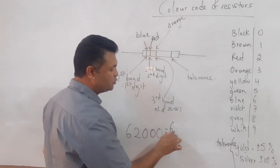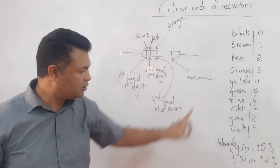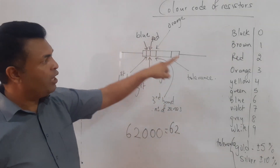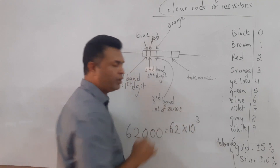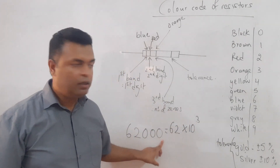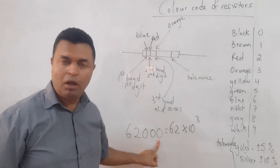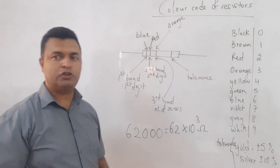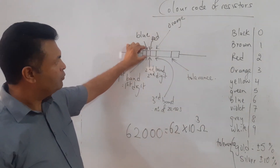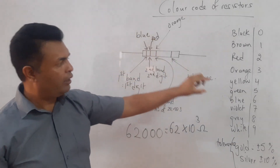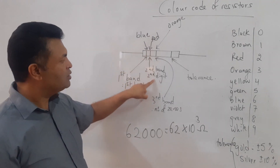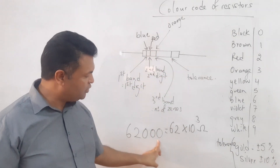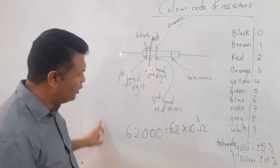So the first band is blue (six), the second is red (two), giving 62. The third band is orange (three), meaning I multiply by ten to the power of three — that is, I add three zeros. This gives 62,000 ohms as the value of the resistance.